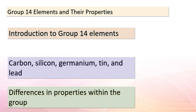Today, we're delving into the world of group 14 elements, where differences between elements within the same column become strikingly evident. Group 14 includes carbon, silicon, germanium, tin, and lead. Despite belonging to the same group, these elements exhibit diverse characteristics. Our journey starts with carbon, the lightest element in this group. Carbon takes various forms — from the dazzling hardness of diamond to the utility of charcoal — with versatility finding applications in numerous fields.